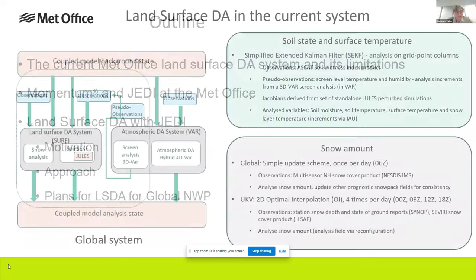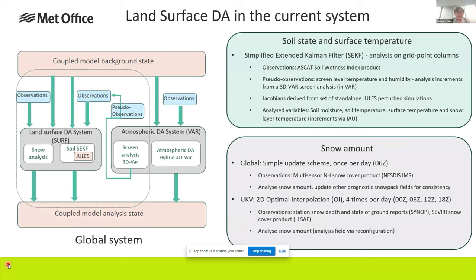Let's start by looking at our current system. This schematic shows the DA processes for the land and atmosphere in our current global NWP system. Our land surface model is JOULES, internally coupled with our atmospheric model. Together they provide a coupled model background state to the land and atmosphere DA systems. Our land surface DA system is called SURF, and it has separate components for analyzing snow, soil state, and surface temperature.